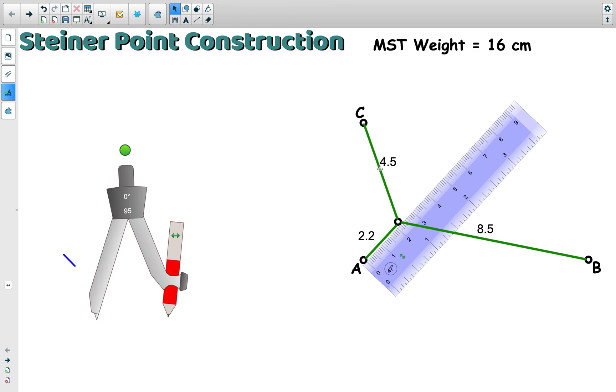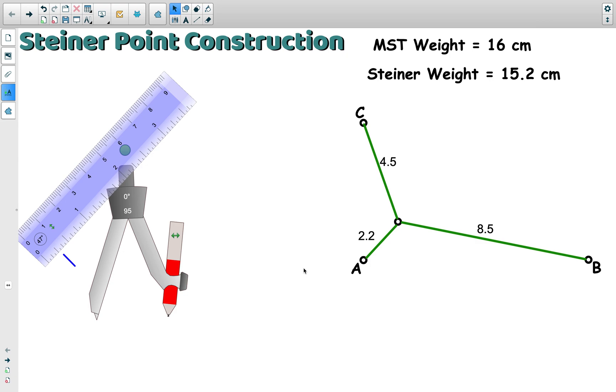If we add these all up, we get 15.2. So we found the weight of the minimum network, and it is through a Steiner point.